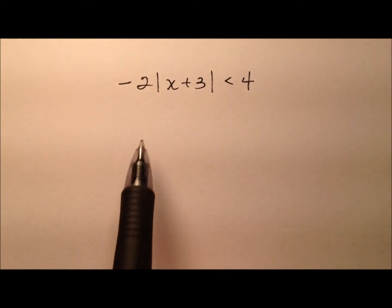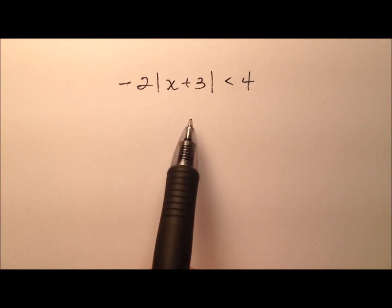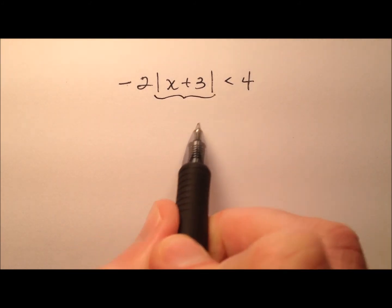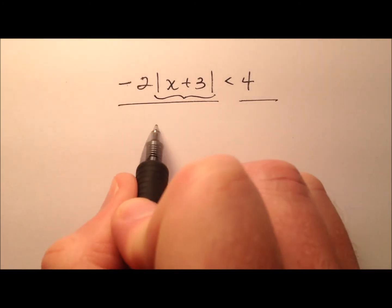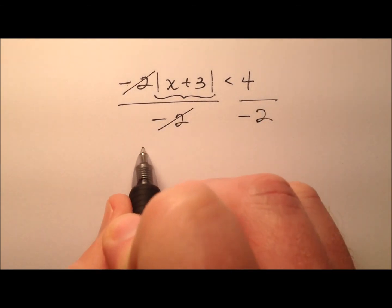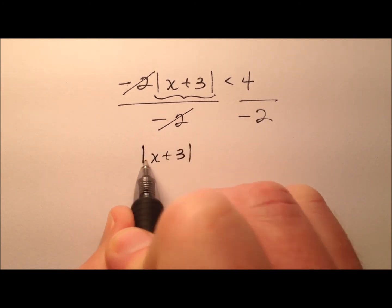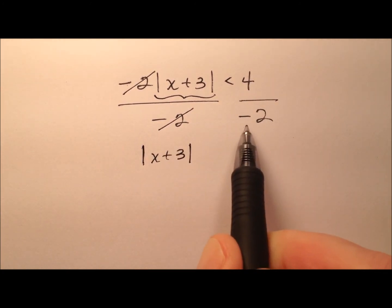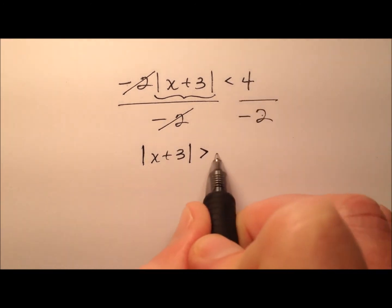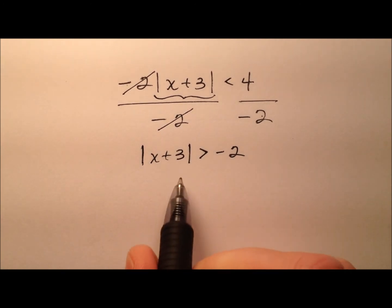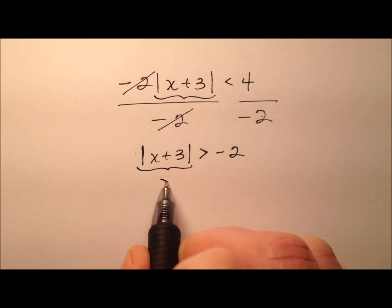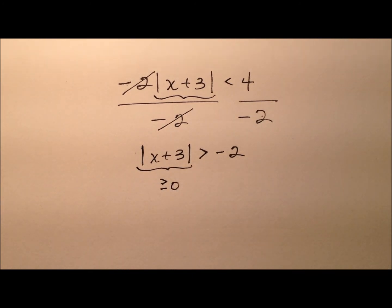In this last example, I have negative 2 times the absolute value of x plus 3, and that's less than 4. In order to isolate this absolute value expression, I need to start by dividing both sides of this inequality by negative 2. Here I have my absolute value expression isolated, but I divided by a negative, so I need to flip the sign of the inequality. And 4 divided by negative 2 is negative 2. Remember, absolute value expressions are always greater than or equal to 0 — they're always non-negative.